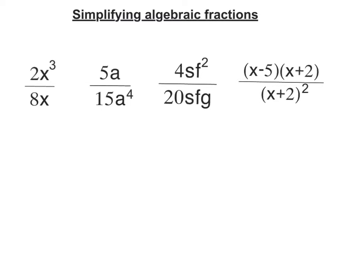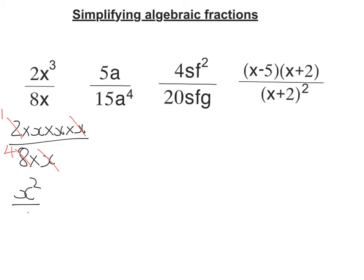So on the top I've got 2 times x times x times x over 8 times x. I can cancel an x because I'm multiplying, and I can cancel through by 2. So I'd have a 1 here and a 4. That leaves me with x times x on the top, so that's x squared over 4.